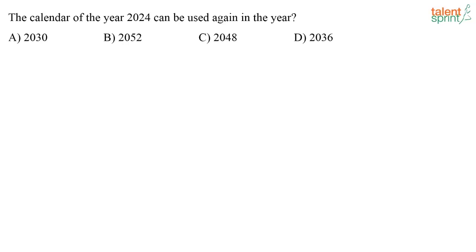The calendar year of 2024 can be used again in some future year. So how do you solve such questions on calendars? For calendars, the logic you will use is generally finding out the number of odd days. So how will you solve this question? Let me tell you how to solve such questions. Generally when such questions come, for example if it is 2024...